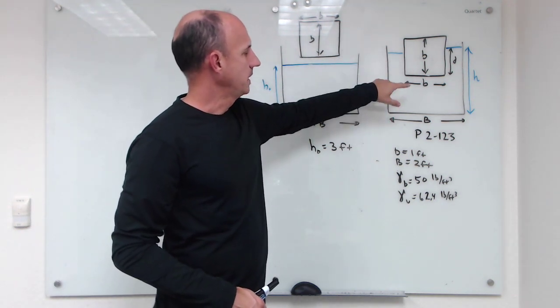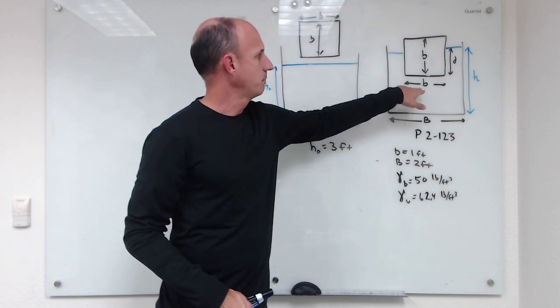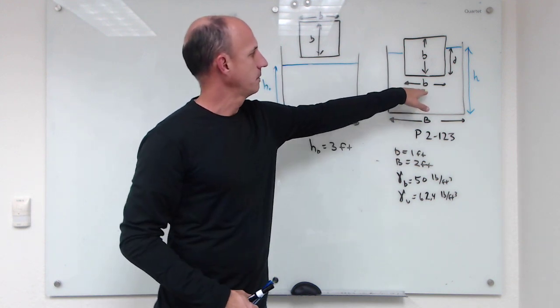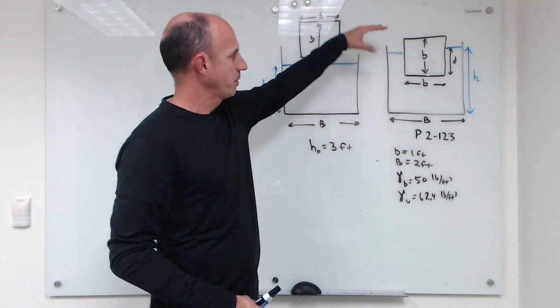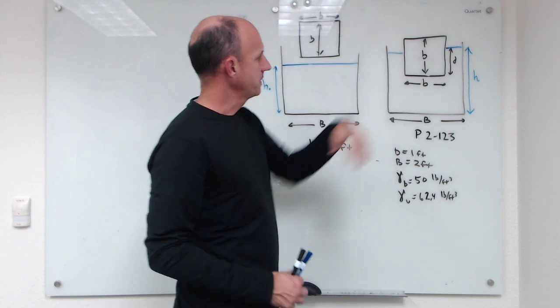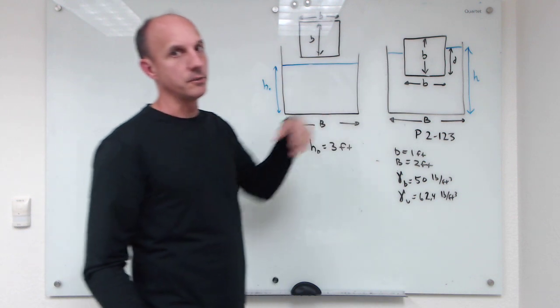The block has a square bottom and it has a width of one foot, b equal to one foot. So when we put that block in, the water is displaced and lifted up and we're trying to find out what is the water level h that the water rises to.